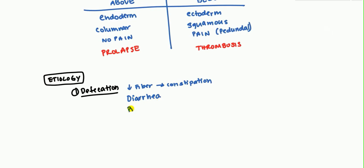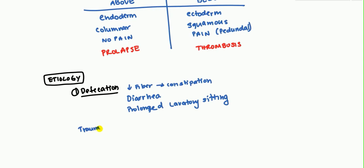Prolonged lavatory sitting — such as reading for extended periods on the toilet — can block flow around the anal canal and is one of the causes of hemorrhoids. Trauma can also lead to it, and even age, as support structures tend to weaken over time.